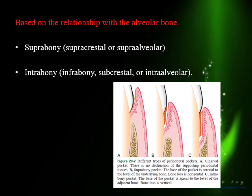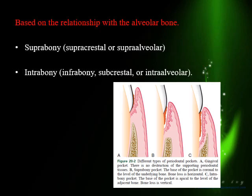Another classification is based on the relationship of the base of the sulcus to the alveolar bone. As long as the base of the sulcus is above the crest of the alveolar bone, it is a suprabony pocket. If the base of the sulcus moves below the crest of the alveolar bone, it is called an infrabony pocket.